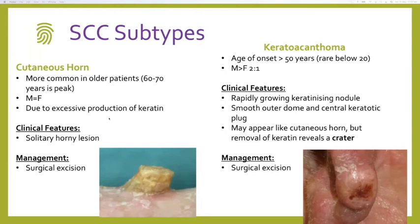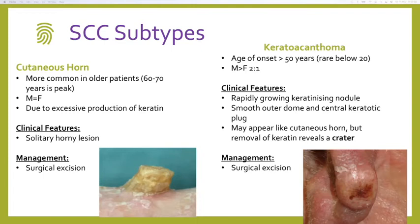Cutaneous horns are a morphological presentation that can arise from actinic keratosis, Bowen's, or SCC — so whenever you see one, you should almost always cut it out and diagnose on pathology. A keratoacanthoma is something you're more likely to hear in pathology — they are rapidly growing nodules with a smooth outer dome and a central keratotic plug, leaving a crater when removed. The buzzwords are smooth dome with central keratotic plug. You still want to excise and diagnose on pathology.